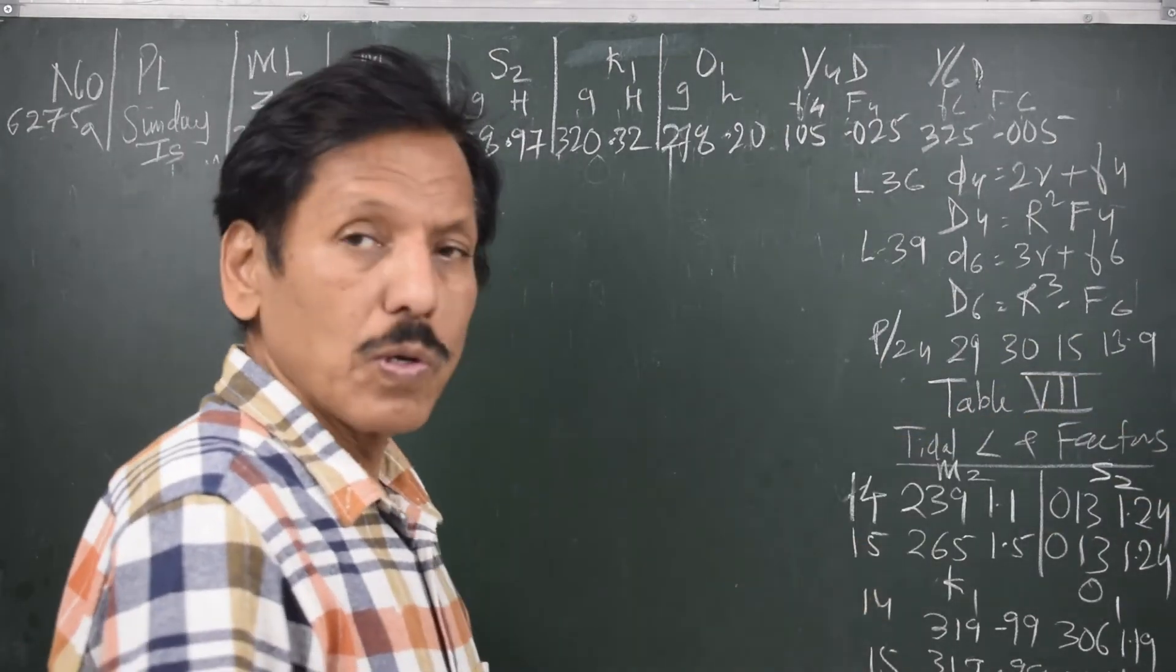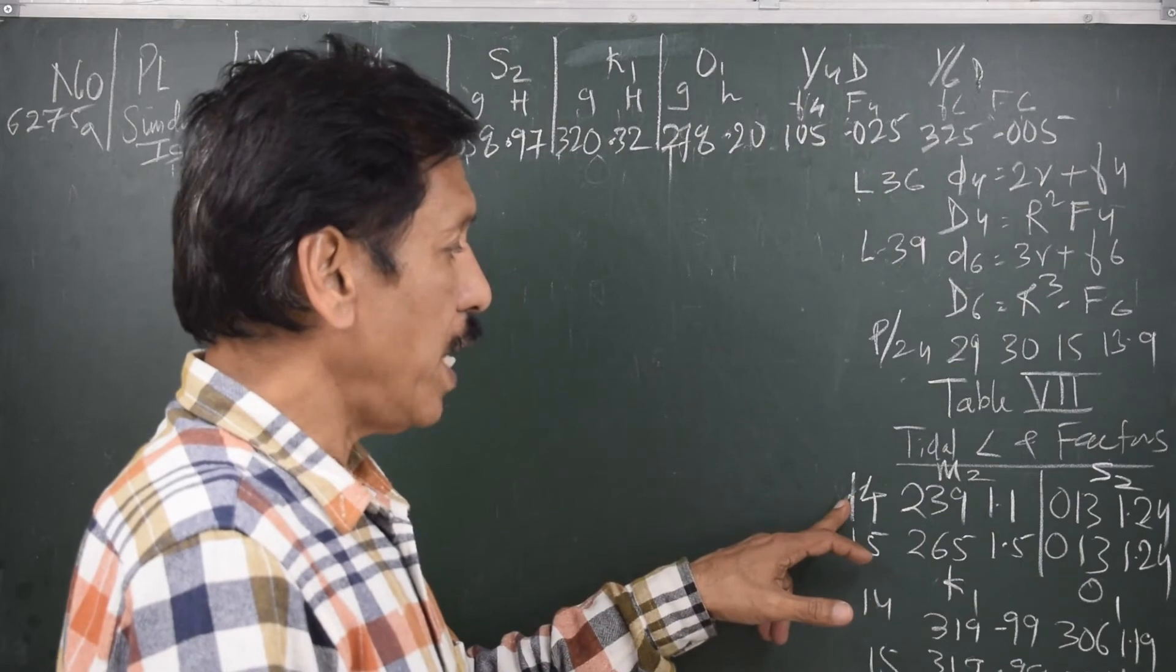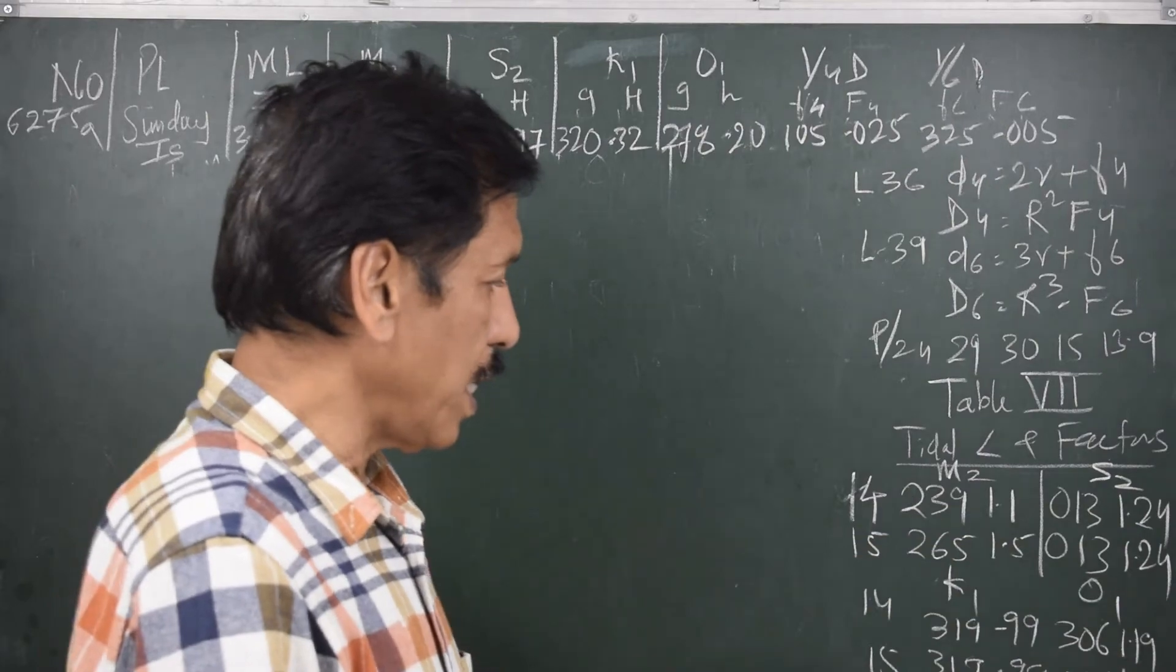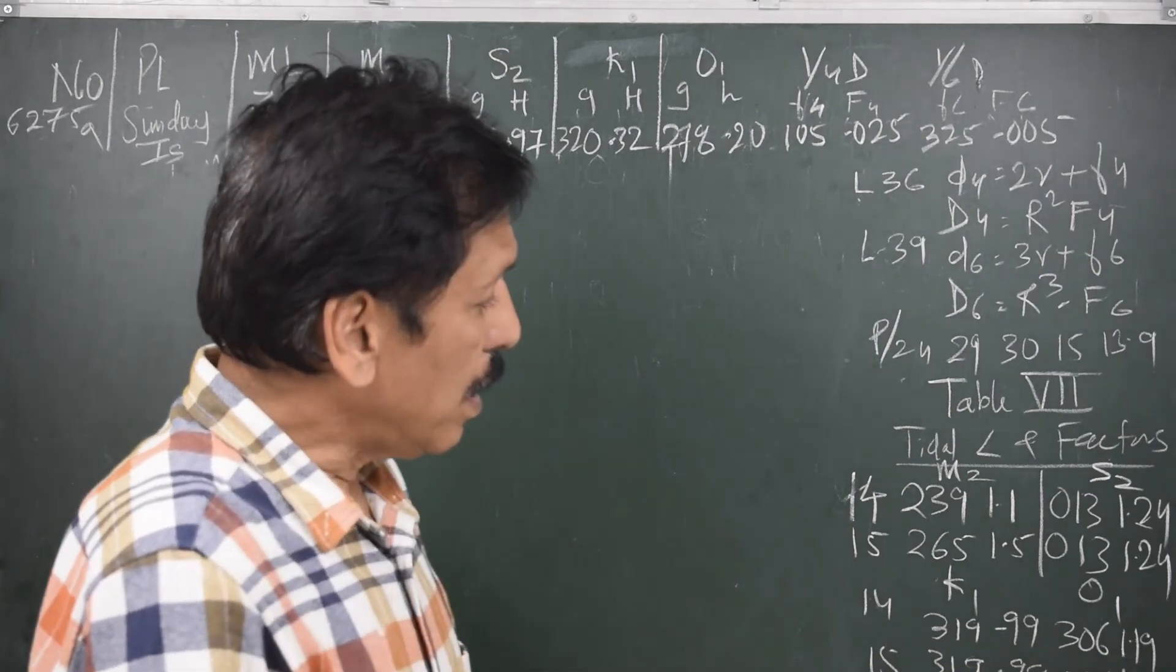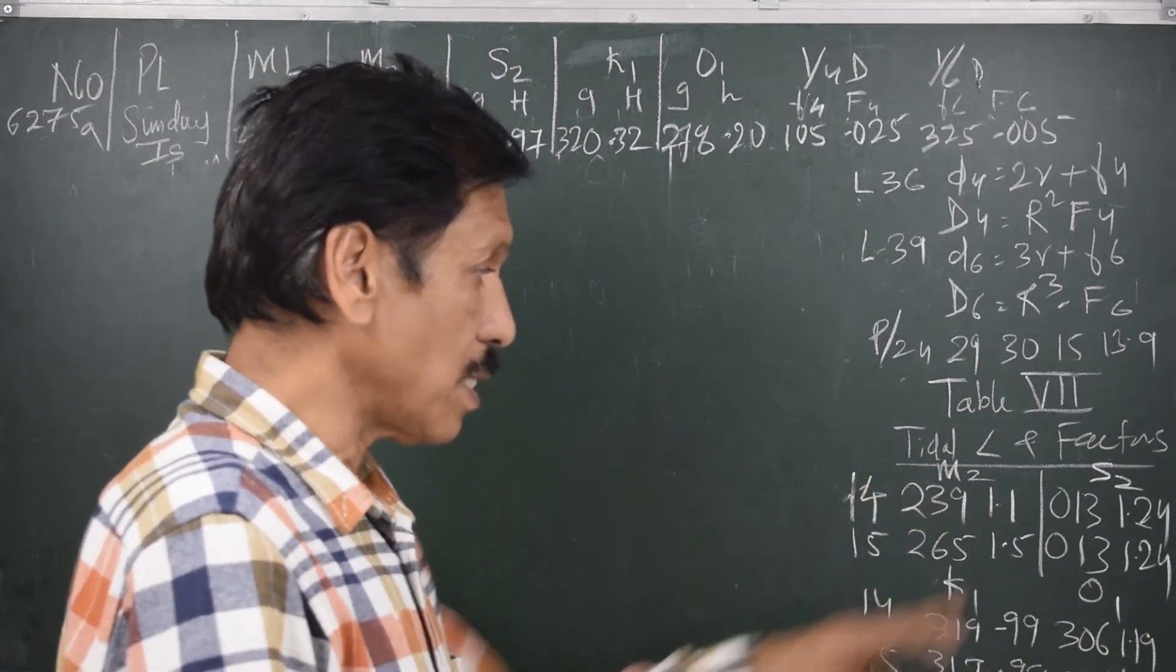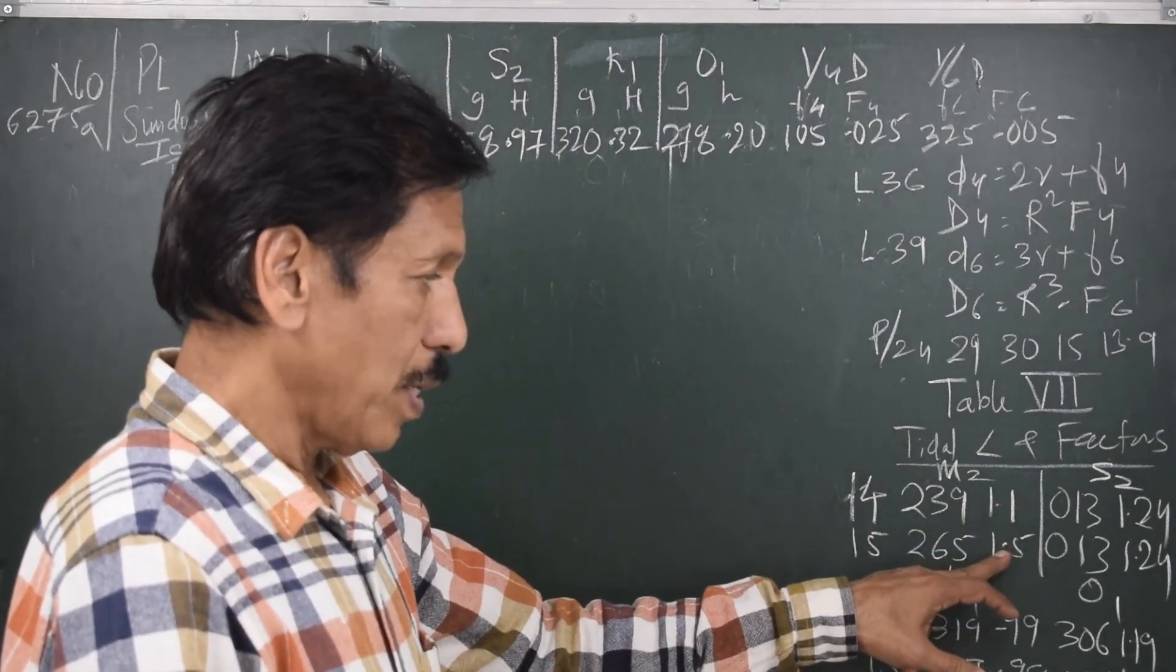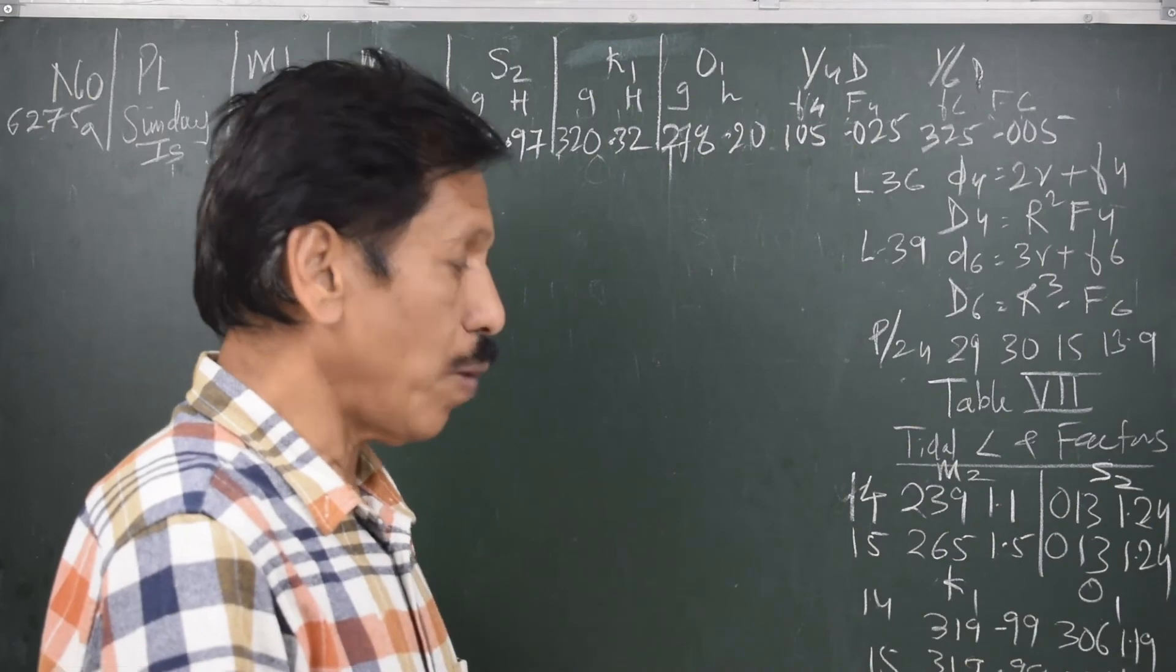Then look at table 7. Table 7 gives you tidal angle and factors. For the date 14th, tidal angle a will be: 239 degrees, 013 degrees, 319 degrees, 306 degrees in the four columns. For example, if you consider M2, the factor for 14th 0000 hours is 1.1, 15th 0000 hours is 1.5. We need to find out the factor for 0800 local time, so we need to interpolate between these two.